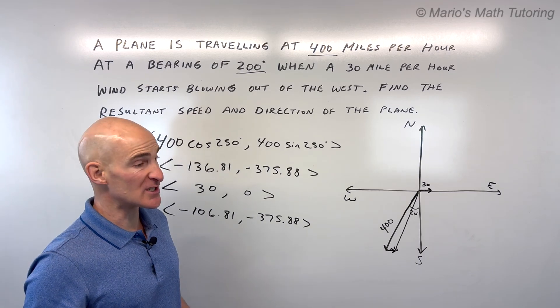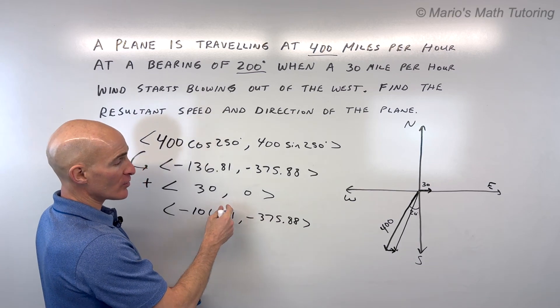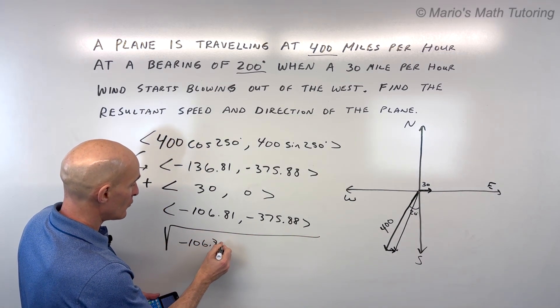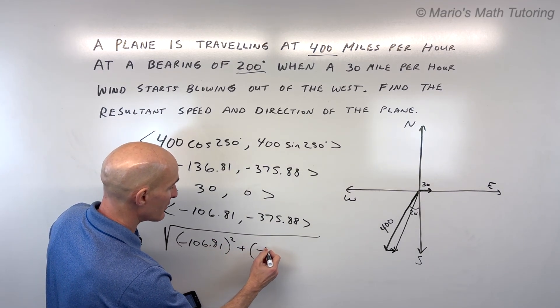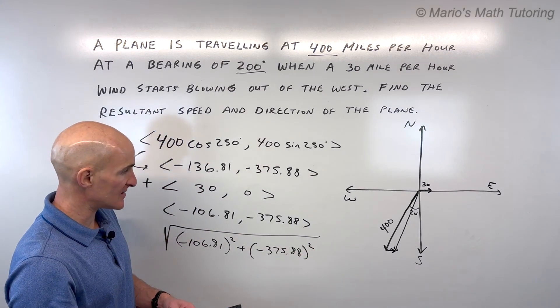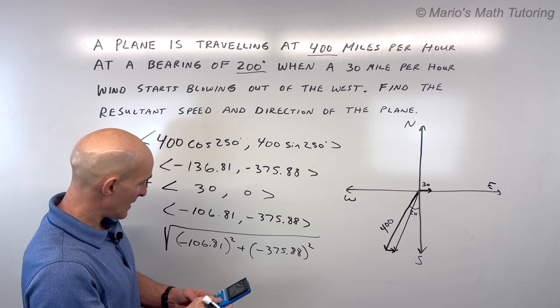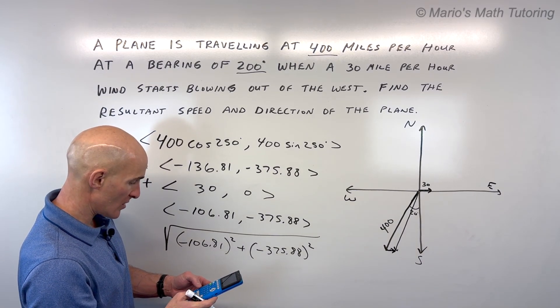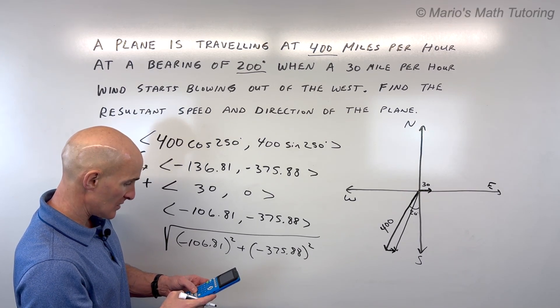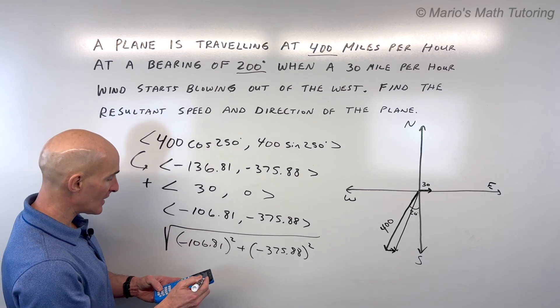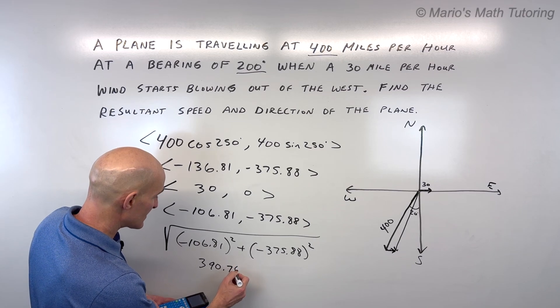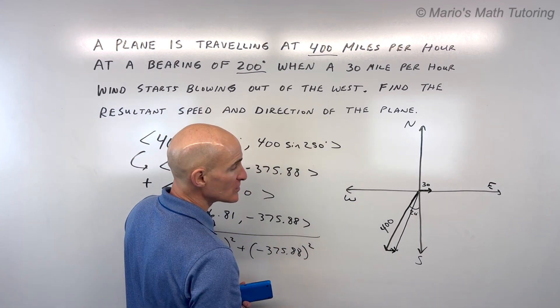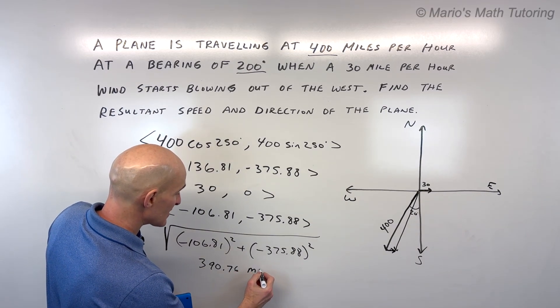Now to find the magnitude or the speed of the plane, we're going to have to take the X component squared plus the Y component squared, add them together and take the square root. So let me go ahead and write that down here. So we've got the square root of negative 106.81 squared. That's the horizontal component squared. This is just based on the Pythagorean theorem. A squared plus B squared equals C squared. And then take the square root to find C, the hypotenuse. So I'm going to use the numbers that came up on the calculator here. So we'll do negative 106.81 squared plus 375.88 squared. Add those together, take the square root. So I'm getting 390.76. So that's how many miles per hour the plane is going to be traveling at now because the wind is actually slowing down the plane a little bit. It's kind of opposing the plane. So 390.76 miles per hour.